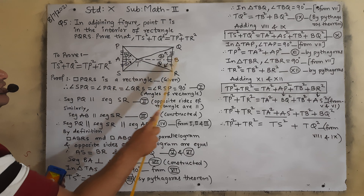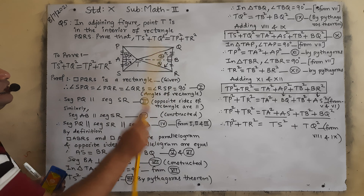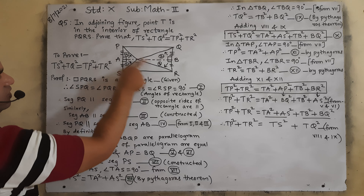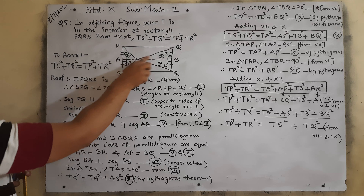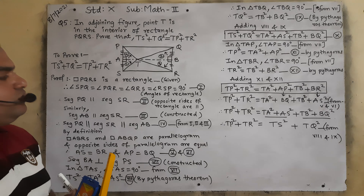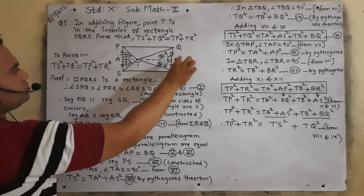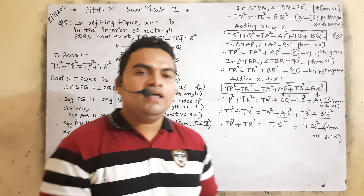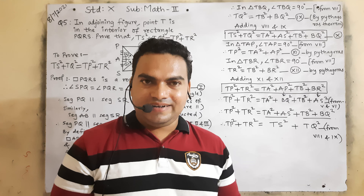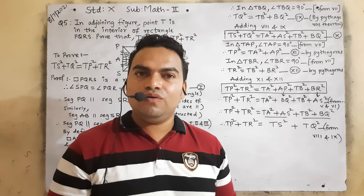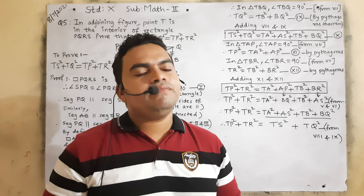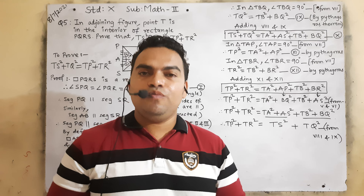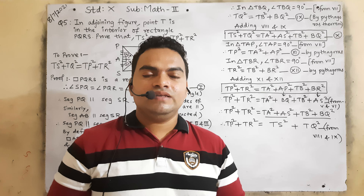How we proved it: first we made the construction where AB is perpendicular to PS and AB is perpendicular to RQ. Then we identified 4 triangles: first and second opposite, then third and fourth. We added first and second, then third and fourth. Finally, we used AP = BQ and AS = BR to rearrange and complete the proof. The properties of rectangle, parallelogram, parallel lines, and Pythagoras theorem were all utilized in question number 5. I hope you understood — please take practice. Best of luck. Thank you so much.